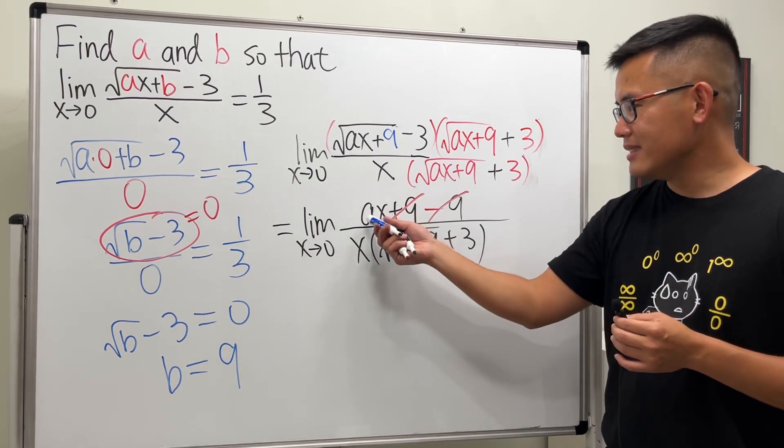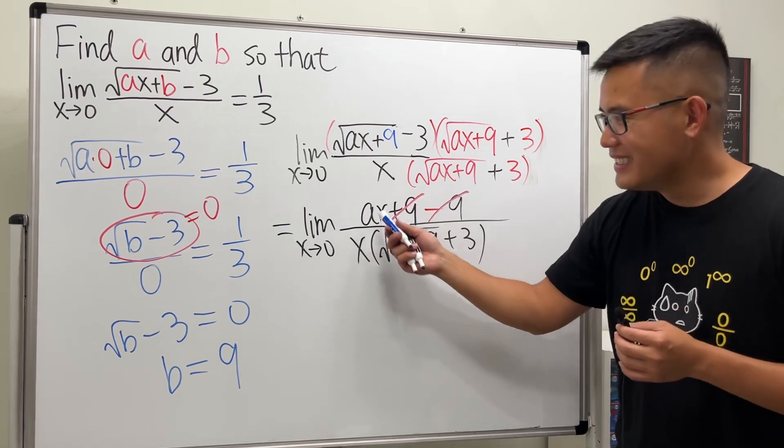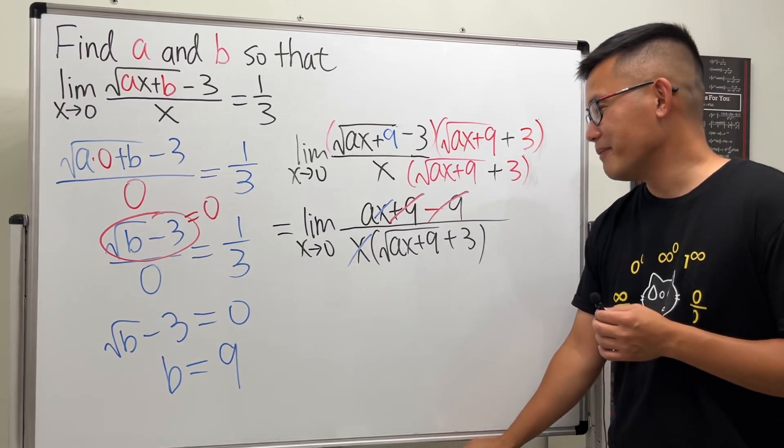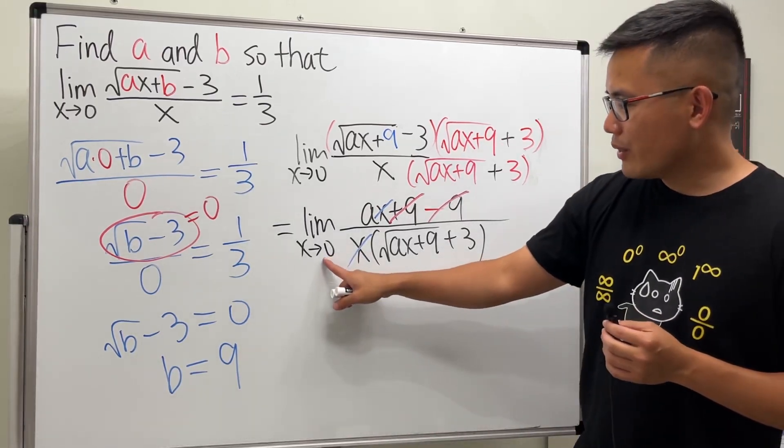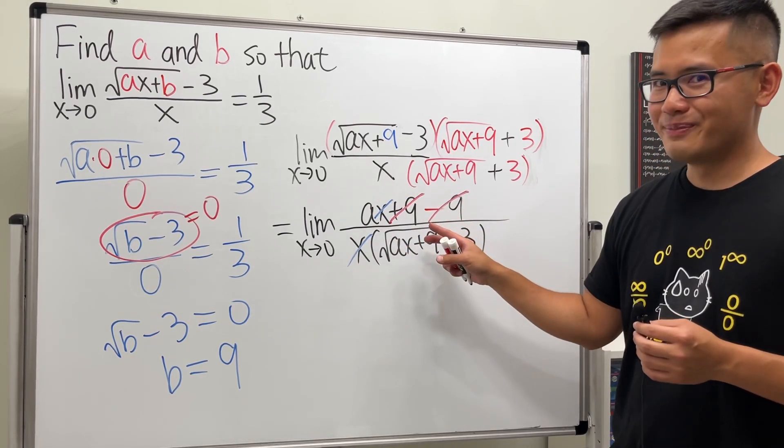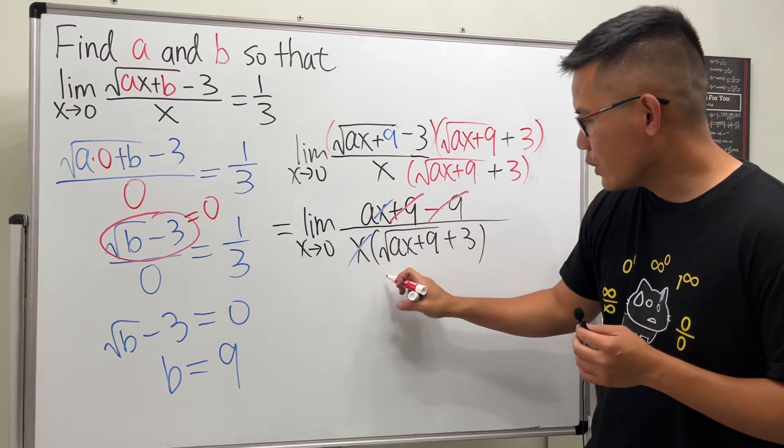Check this out: plus nine minus nine is equal to zero. After that, we have x on the top here and x on the bottom here, right? And this nine times this is a times x, so we can cancel this x and that x together. Cool.